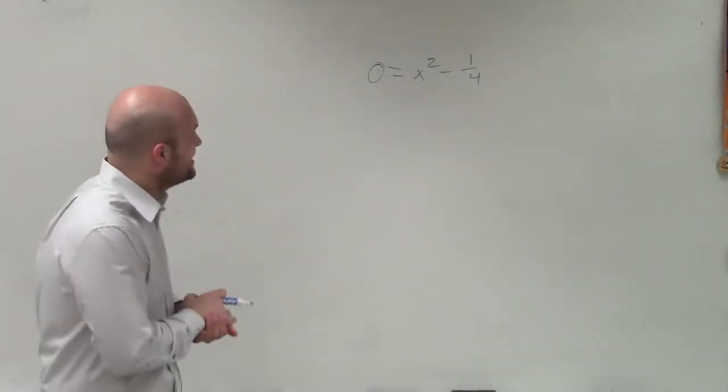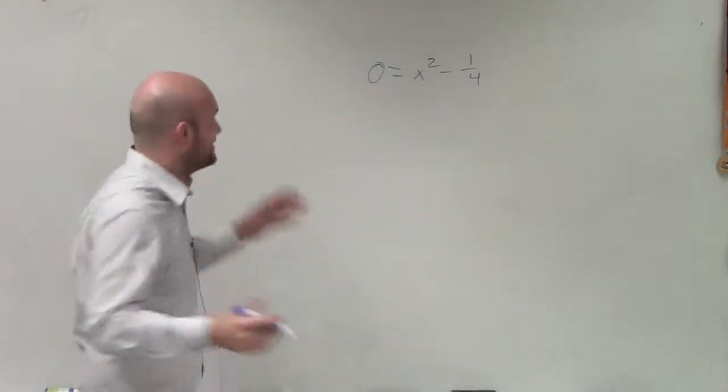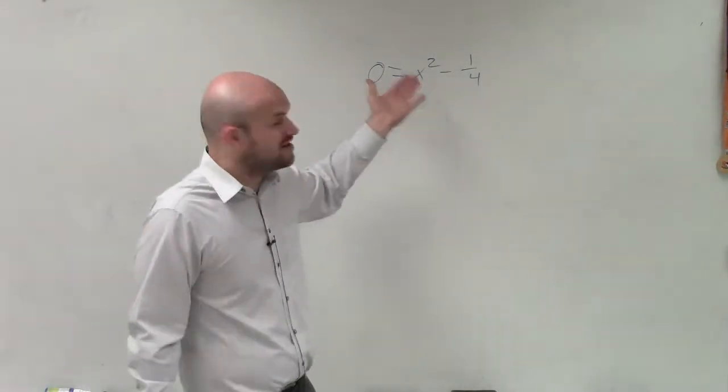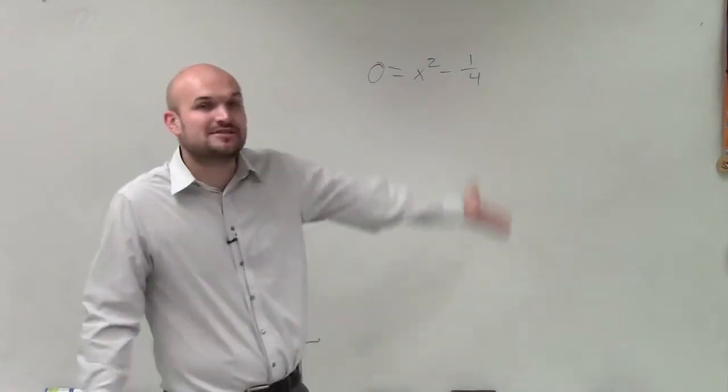And what I want to do for you in this equation is solve by using the square root method. So to do that, I need to isolate my variable. And this is pretty nice, because the only thing happened to my variable is it is being squared, and it's being subtracted by 1 fourth.